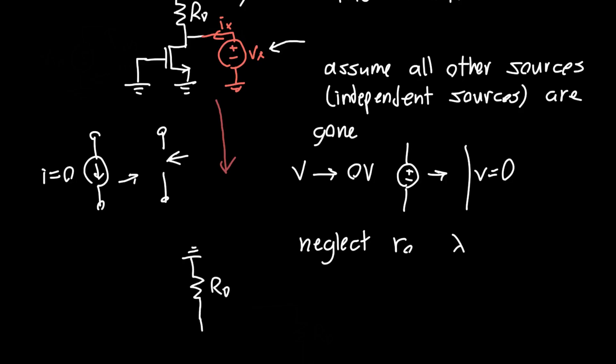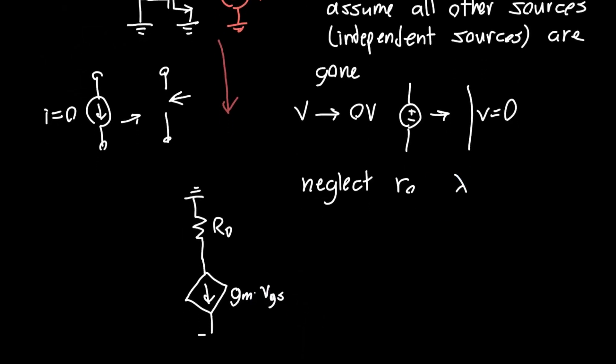We've got a current source whose value is equal to g_m times V_GS, and then that current source goes straight to ground because it's the source of a MOSFET. This is our V_GS and the input here is connected straight to ground.